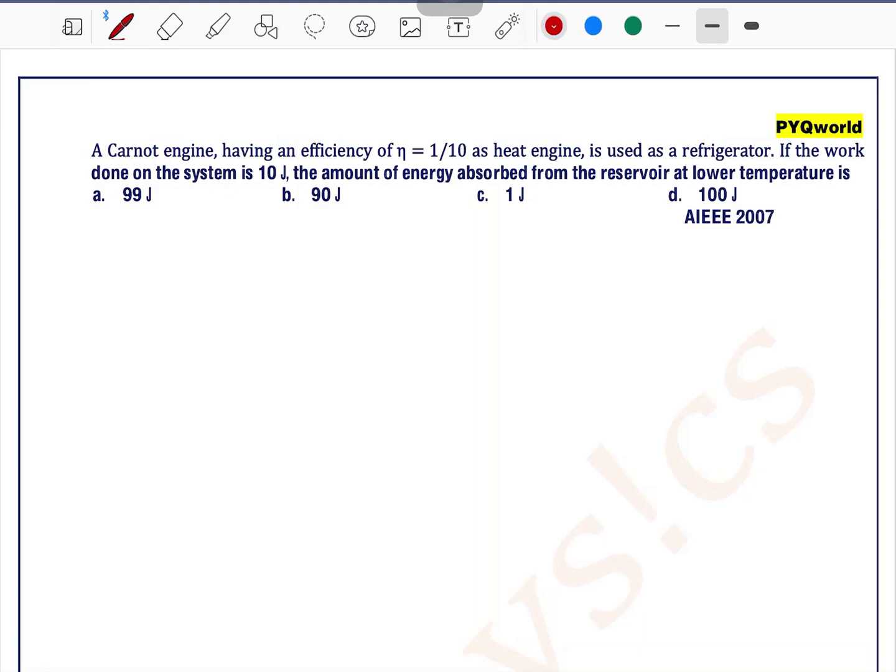A Carnot engine having an efficiency of 1 by 10 is used as heat engine, is used as a refrigerator. If the work done on the system is 10 joules, the amount of energy absorbed from the reservoir at lower temperature is.